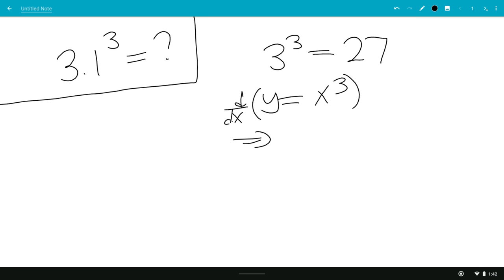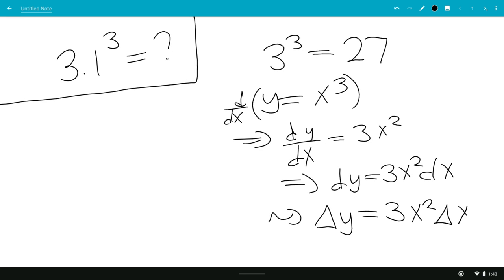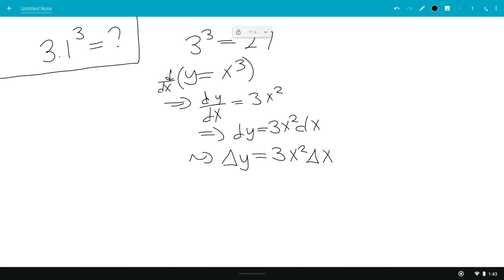Leaving us with dy/dx equals 3x squared. We can multiply by dx, we get dy equals 3x squared dx. Now that approximates to Δy equals 3x squared Δx.